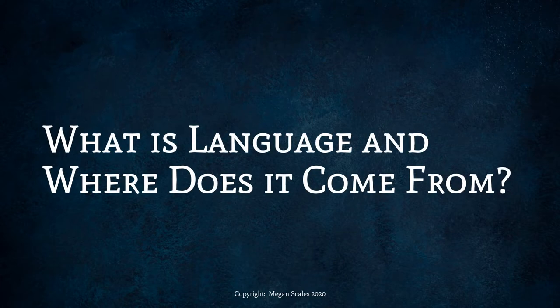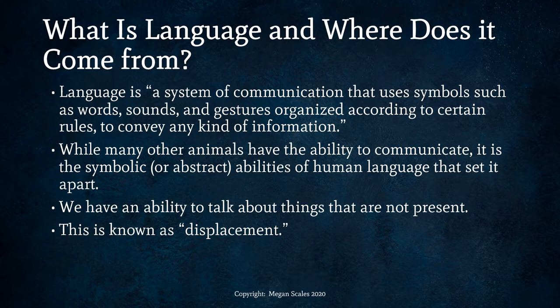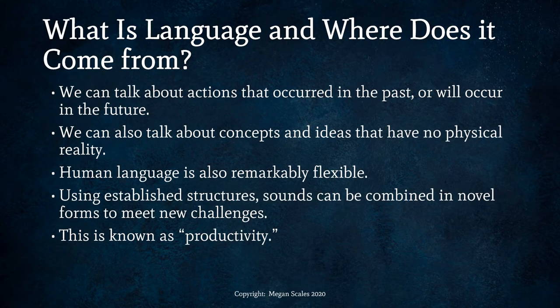So what is language and where does it come from? Language is a system of communication that uses symbols such as words, sounds, and gestures organized according to certain rules to convey any kind of information. While many other animals have the ability to communicate, it is the symbolic or abstract abilities of human language that set it apart. We have an ability to talk about things that are not present — this is known as displacement. We can talk about actions that occurred in the past or will occur in the future, and also about concepts and ideas that have no physical reality.